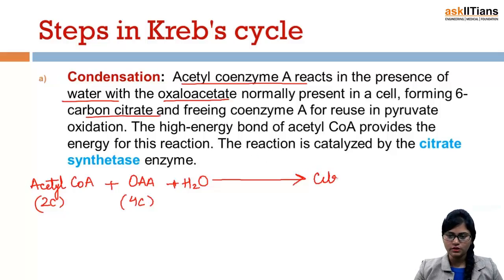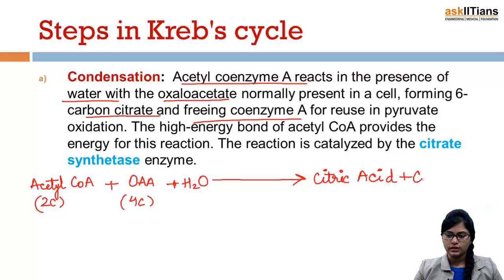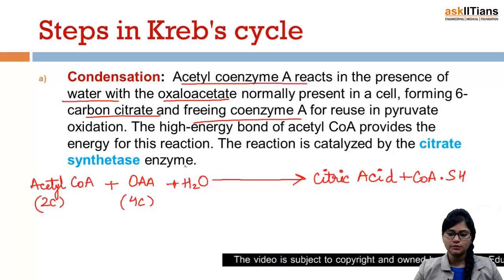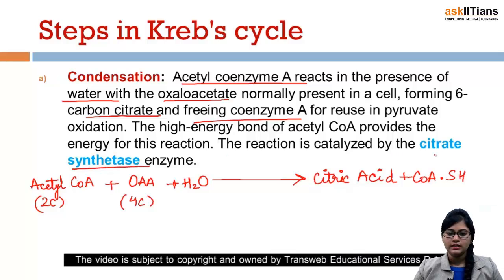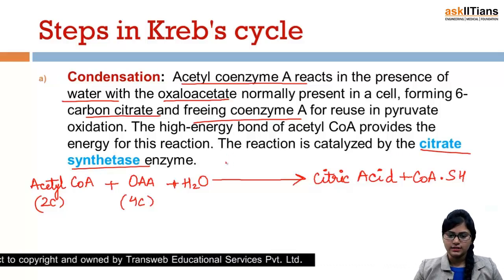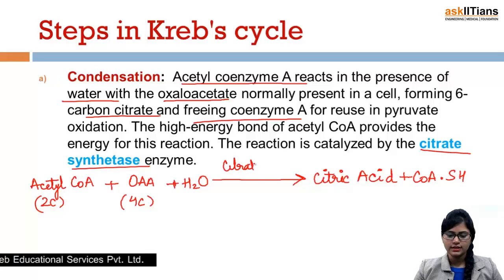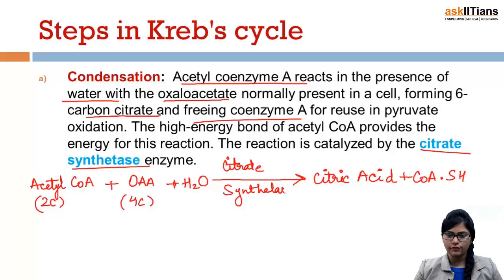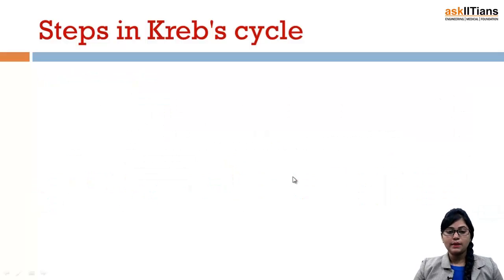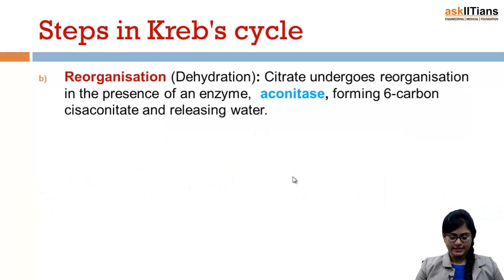Citric acid is formed, which is a six-carbon compound, and one coenzyme A (CoA-SH) is freed. This reaction takes place in the presence of the enzyme citrate synthetase. This completes the first step. Moving on to the next step, which is reorganization.